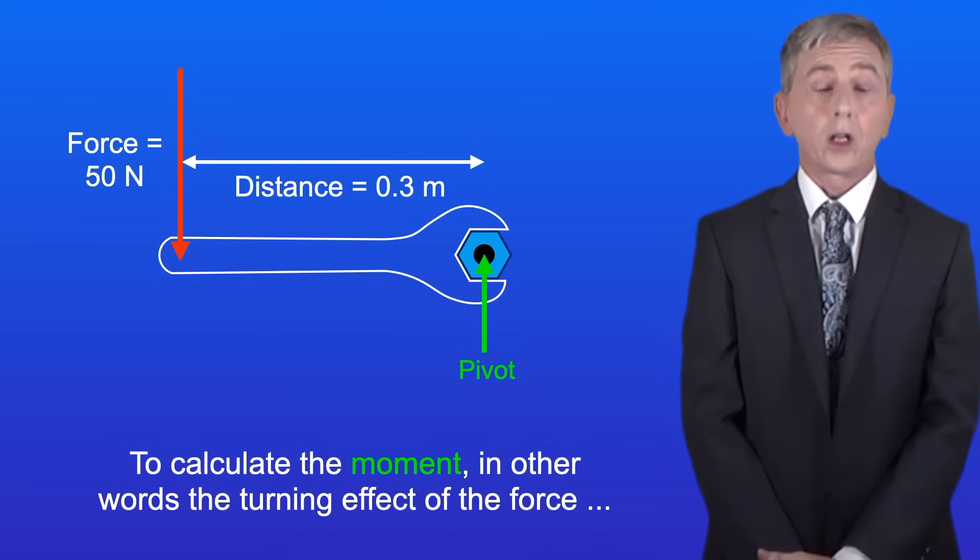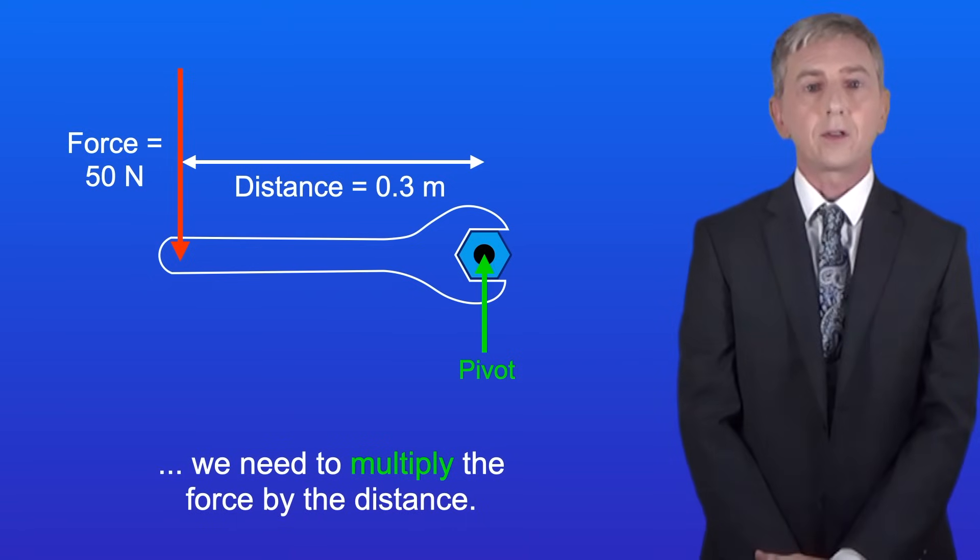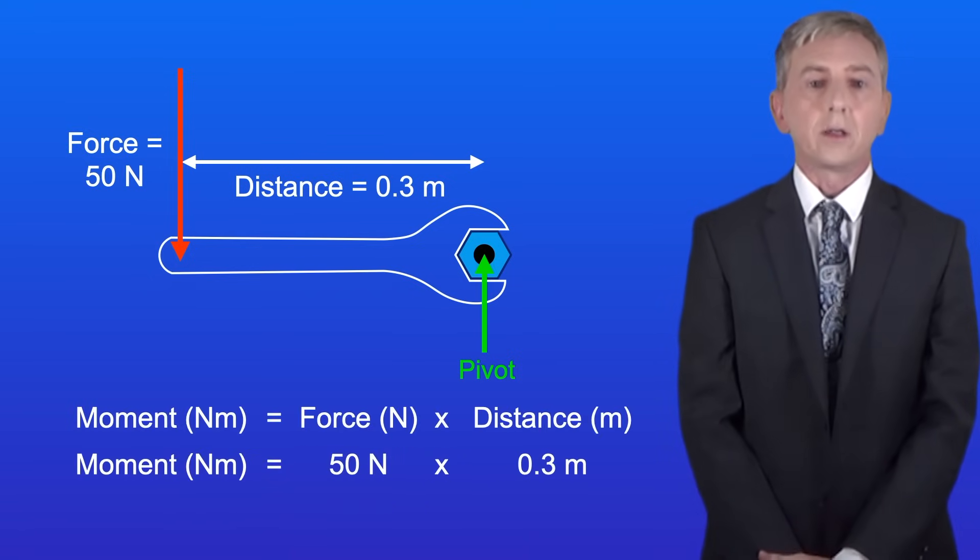To calculate the moment, in other words the turning effect of the force, we need to multiply the force by the distance. So we've got 50 newtons multiplied by 0.3 meters, giving us a moment of 15 newton meters.